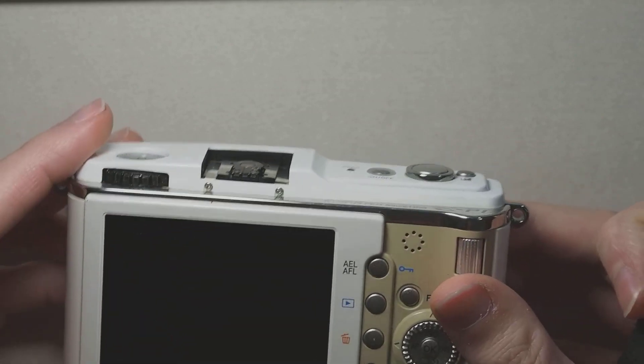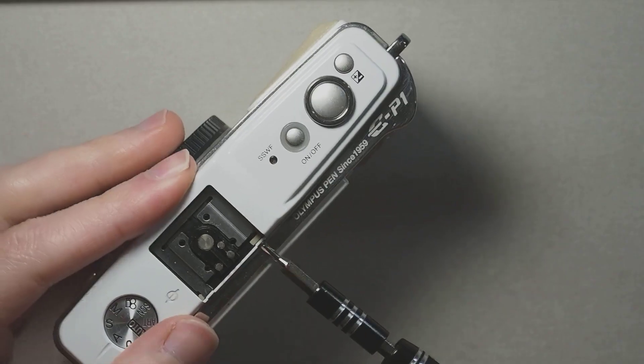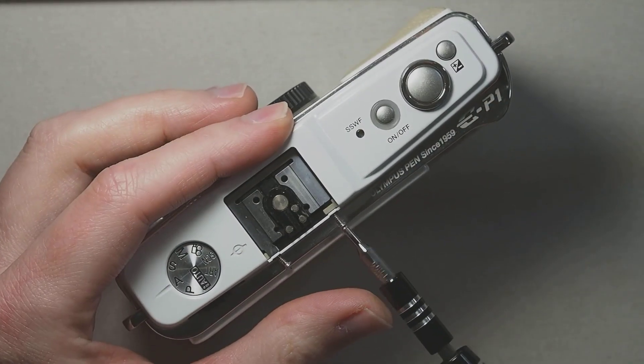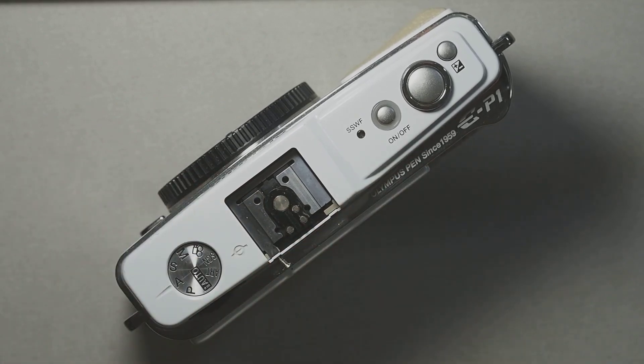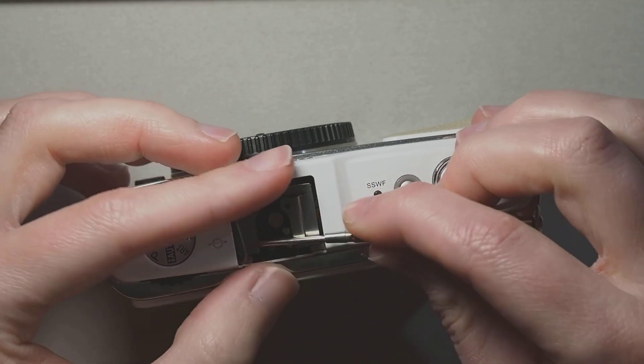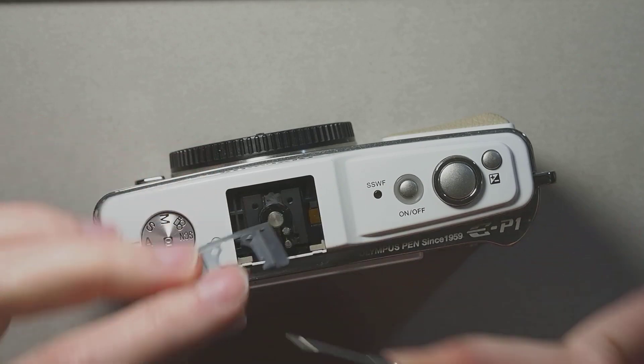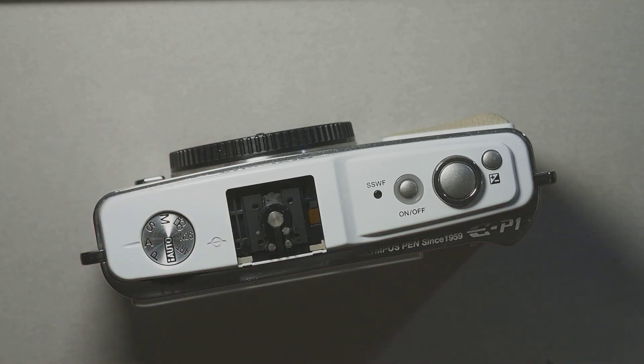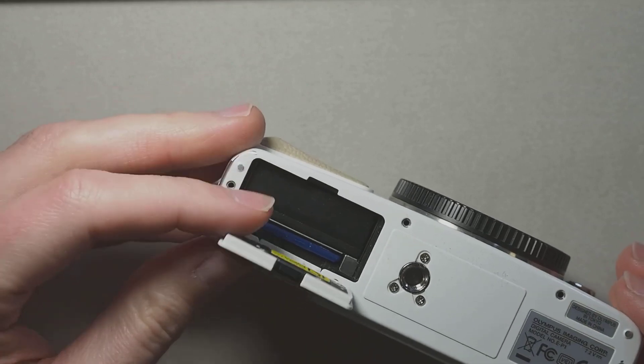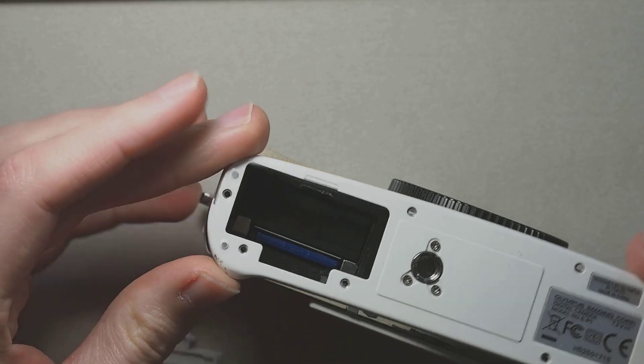And this reveals two more screws facing the back of the camera. You can probably leave this piece in but it might fall out later by itself and get lost. Meanwhile the battery door is loose and you can also take the entire bottom cover off.